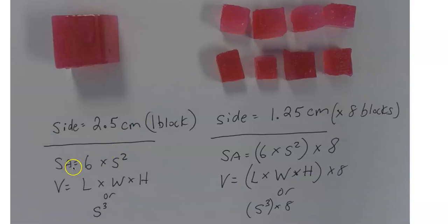When you calculate the surface area, just as a review, you take the surface area of each side: length times width. And because there are six sides, you multiply by six. To get the volume, it's length times width times height, or side cubed.